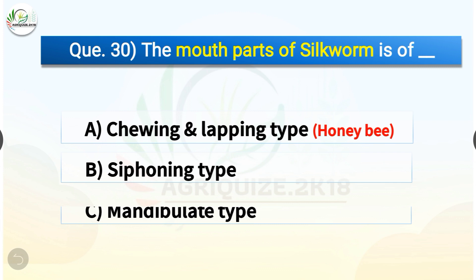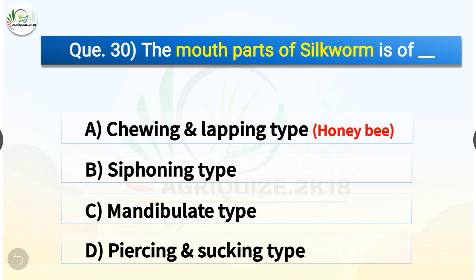Question number thirty: The mouthparts of silkworm are of which type? The options are: chewing and lapping type, siphoning type, mandibulate type, or piercing and sucking type. The correct answer is option C — mandibulate type. The mouthparts of silkworm are of mandibulate type, whereas the mouthparts of honeybee are of chewing and lapping type.